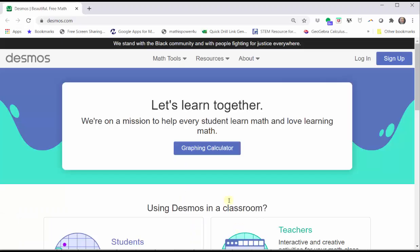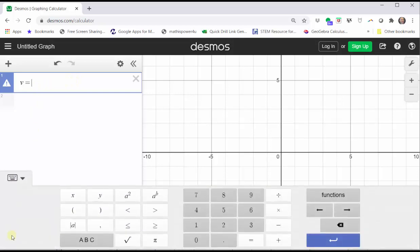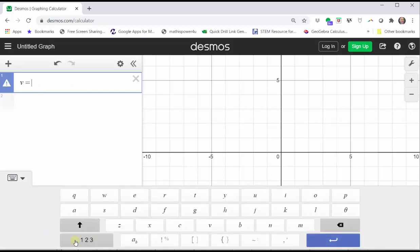To begin, we go to Desmos.com and click graphing calculator. In cell one, we will enter the ordered pairs of the vertices as a list. Let's use the variable V for our list, equals. Now for a list, we use square brackets, which on a normal keyboard is toward the upper right-hand corner, or using the Desmos keypad, click ABC, and we can see the square brackets here toward the bottom.